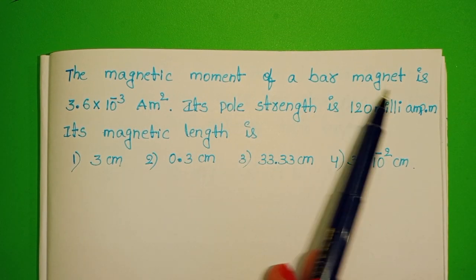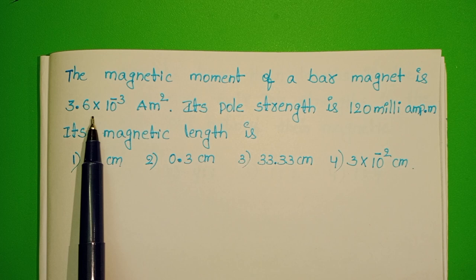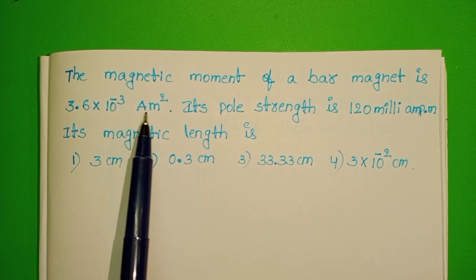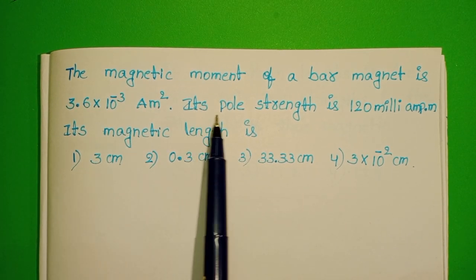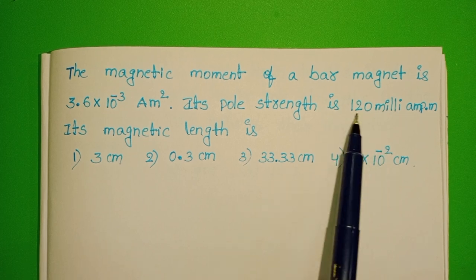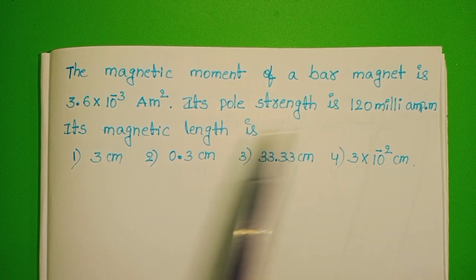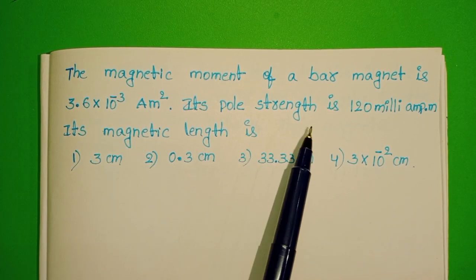The magnetic moment of a bar magnet is 3.6 × 10⁻³ ampere meter square. Its pole strength is 120 milliampere meter. Its magnetic length is?